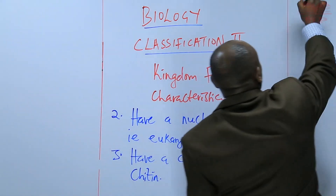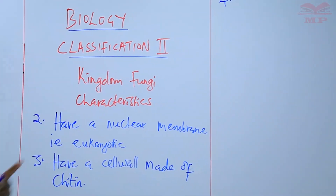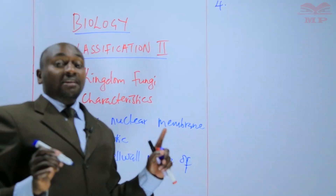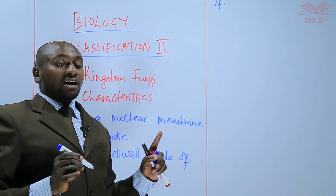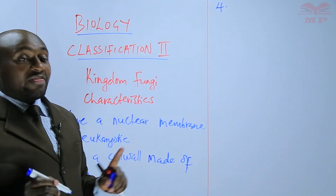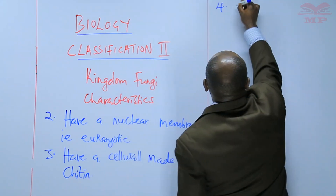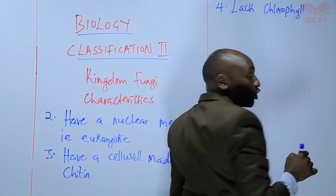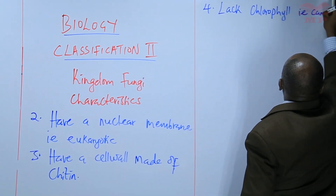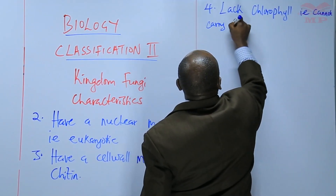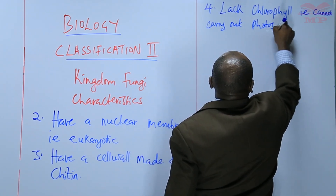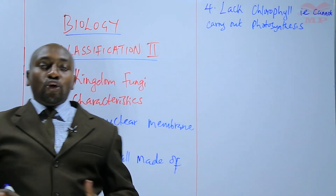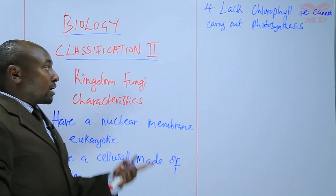Characteristic number four: if you observe things like mushrooms, some are brown, some are cream, some are white — you find that fungi lack chlorophyll. They do not have chlorophyll like plant cells. So they cannot carry out photosynthesis. That means they are not green and cannot make their own food. This explains why most fungi are found growing on bread or on food, because they cannot make their own food.